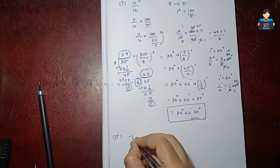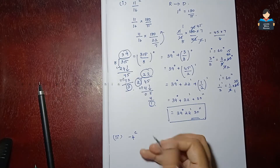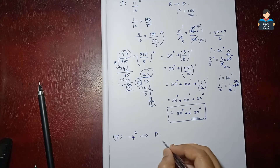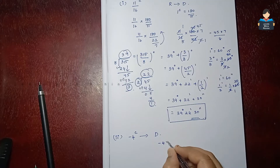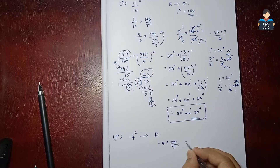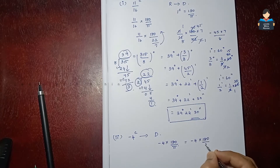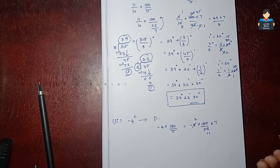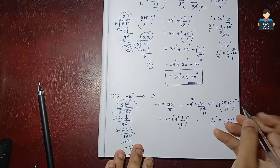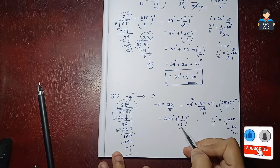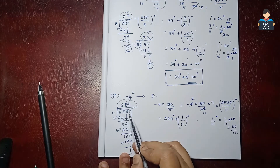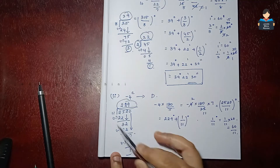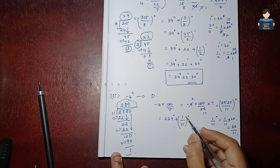Second subdivision: minus 4 radian. To convert to degrees, multiply by 180 by pi. So minus 4 into 180 by 22 by 7. This gives minus 2520 by 11. Dividing: quotient is 229 degrees, remainder 1. So we have minus 229 degrees plus 1 by 11 degree remaining.